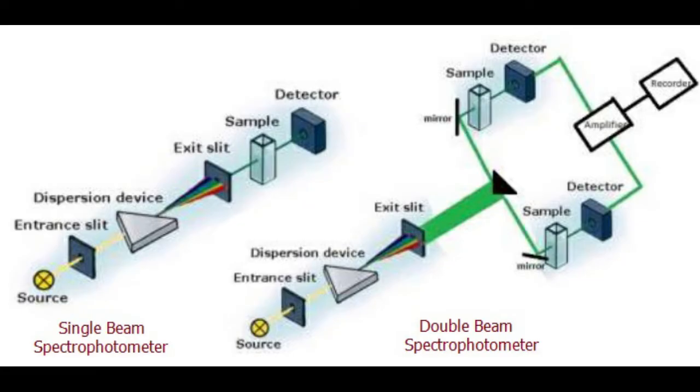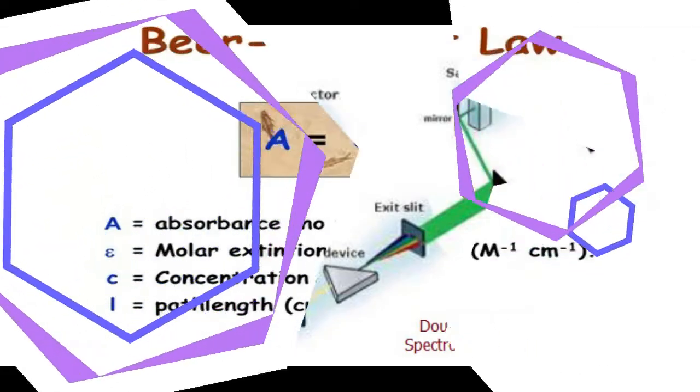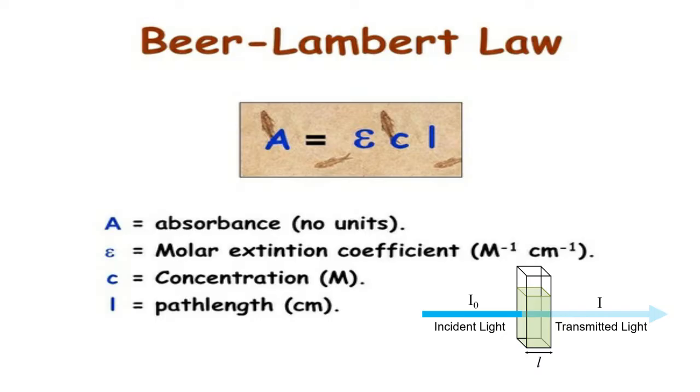Working principle: The working principle of the spectrophotometer is based on Beer-Lambert's Law, which states that the amount of light absorbed by a colored solution is directly proportional to the concentration of the solution and the length of the light path through the solution.